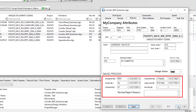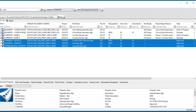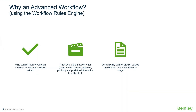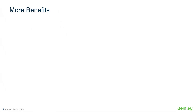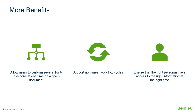The information can be added automatically during a series of actions triggered by a menu option, such as approve or reject, without the possibility for a user to manually alter the data. Advanced workflows can dynamically control pick list values on different document lifecycle stages, and provide the ability to shift and capture revision history attributes. Additional benefits include the ability to perform several built-in actions at one time on a given document, support nonlinear workflow cycles, and ensure that the right personas have access to the right information at the right time.